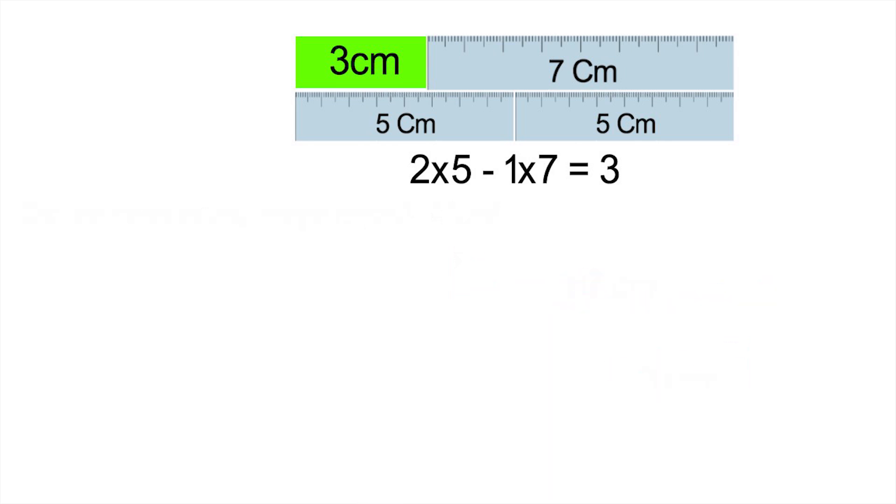Well, in our example, we know we can achieve a measure of 3 centimeters by 2 fives minus a 7. That means if we want to achieve 6 centimeters, we can just multiply both sides by 2. If we distribute that 2, we see that 4 of the 5 centimeter rulers minus 2 of the 7 centimeter ones gives us exactly 6 centimeters. And we can use this to get any multiple of 3.